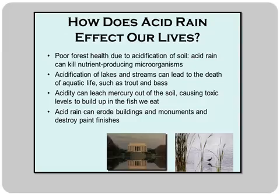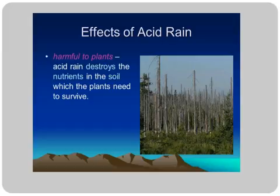Acidic rain erodes buildings and damages paint. Lakes contain delicate organisms, and the acidic range is very harmful for them. This is another slide showing the effect of acid rain. It has a harmful effect on plants because acid rain destroys the nutrients in the soil which plants need to survive. The forest shown here has poor growth because it is receiving poor nutrients.